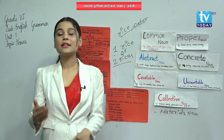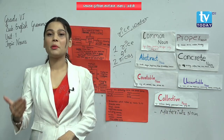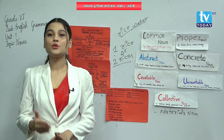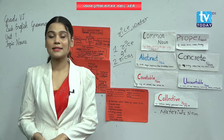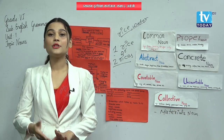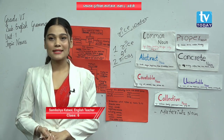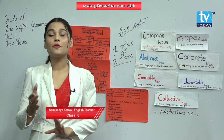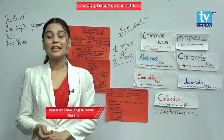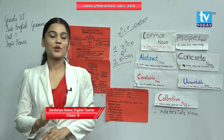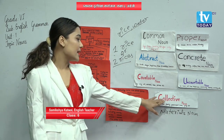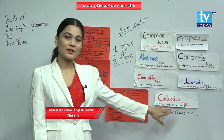More than two or three people, more than two or three things, more than two or three animals — like a bunch of keys, a bunch of hoots — they all describe collective noun. Clear, my dear students?